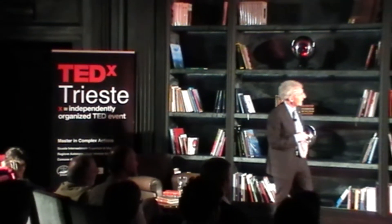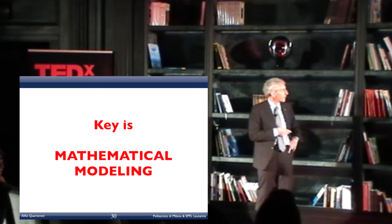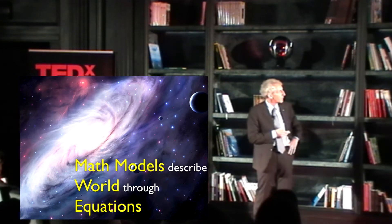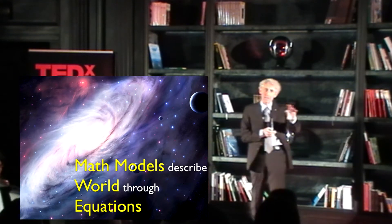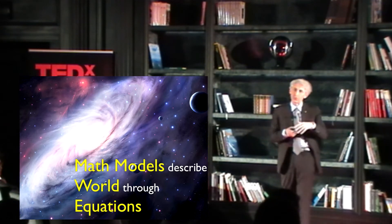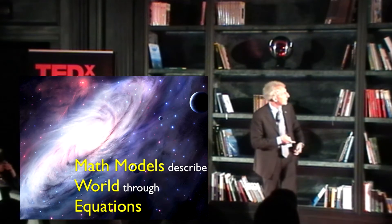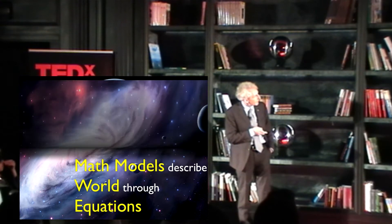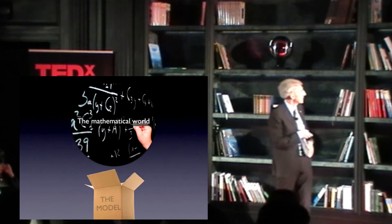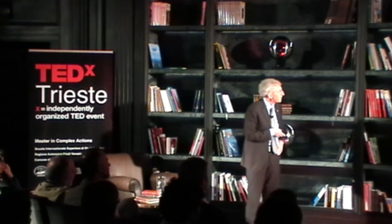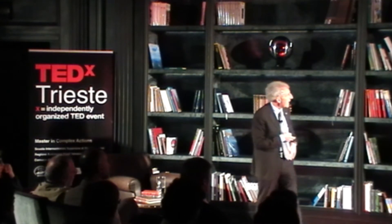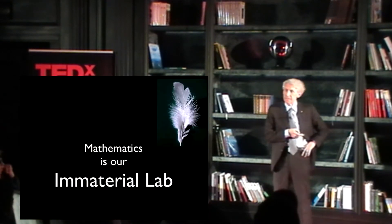You can use mathematics not only for observing and interpreting nature, but also in a functional way — to design, to entertain. The key word is mathematical models. A mathematical model describes the world through equations. You have two basic concepts: the model and the equations. The model is there to describe reality, turning the real world into a mathematical representation.